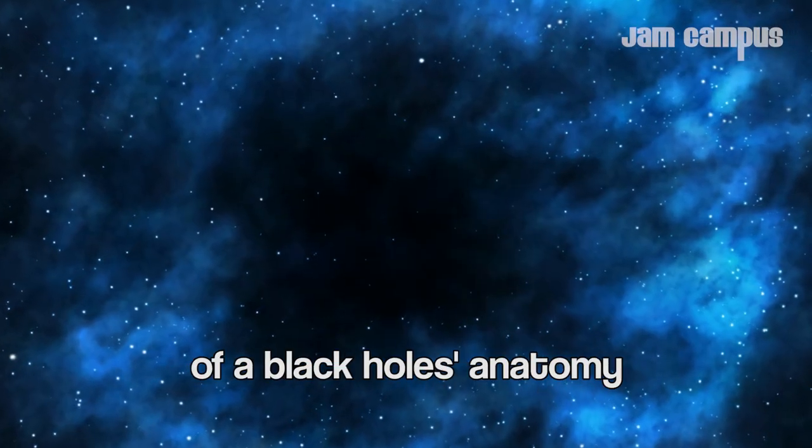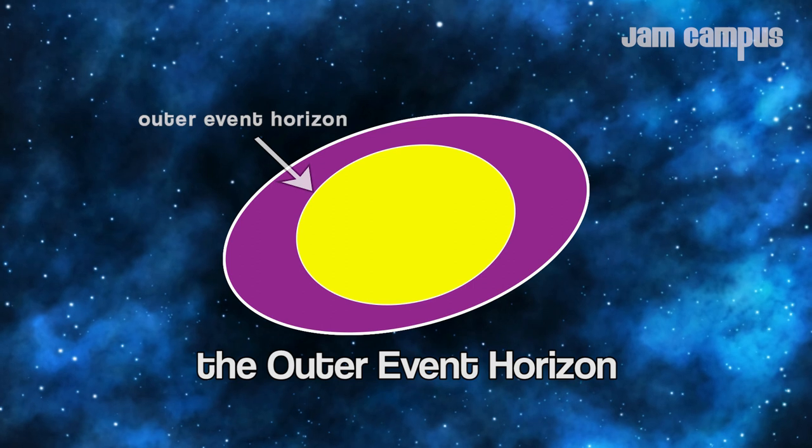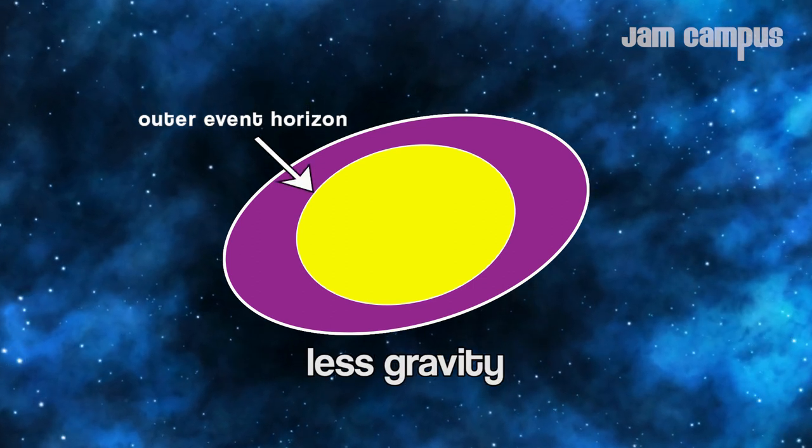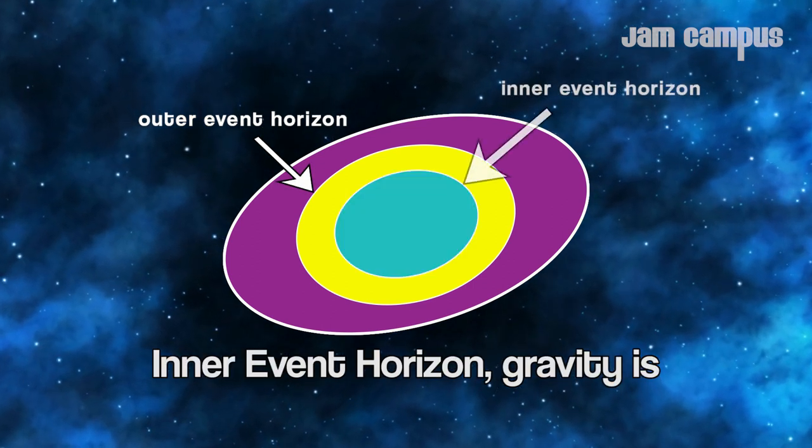The three main parts of a black hole's anatomy. The outer event horizon, where gravity interrupts the entering, rising gravity strong.